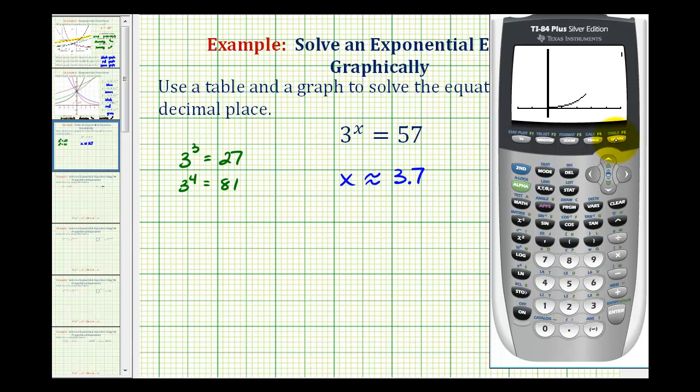So there's our exponential function. And there's our horizontal line, y equals 57. We want to find the x coordinate of this point of intersection.